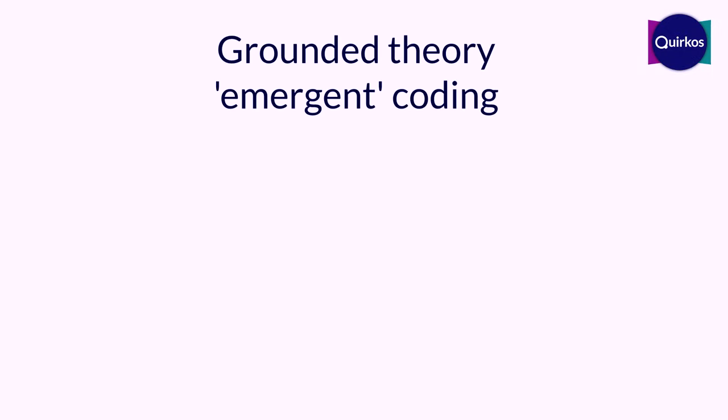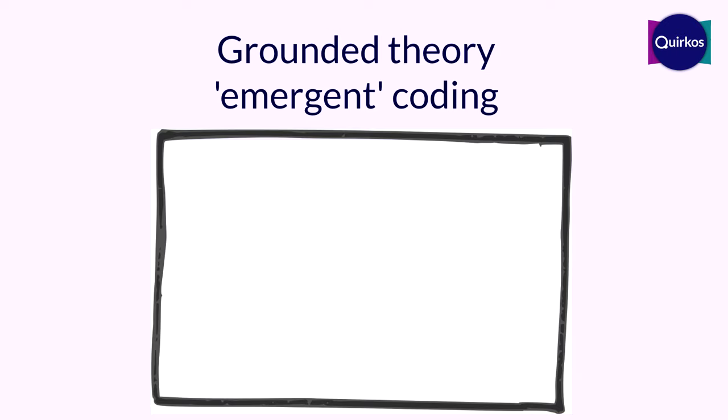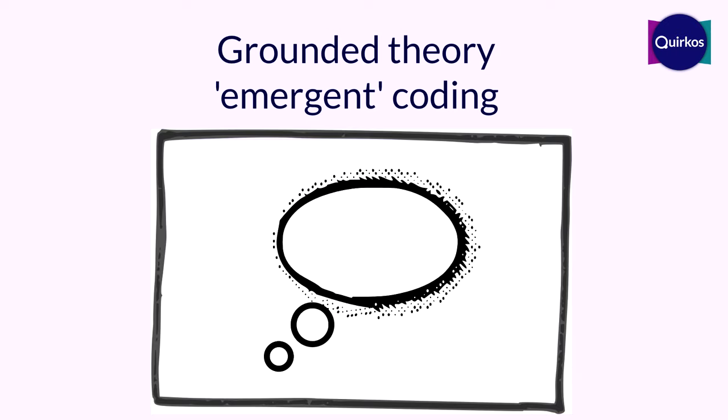There are many different types of coding. The two big kinds are grounded theory or emergent coding, where you start with just a blank sheet — no preconceptions of what you're going to find in the data. You're completely open to having the data speak to you, and just as you go through reading, you define the codes and themes that the data is suggesting to you.